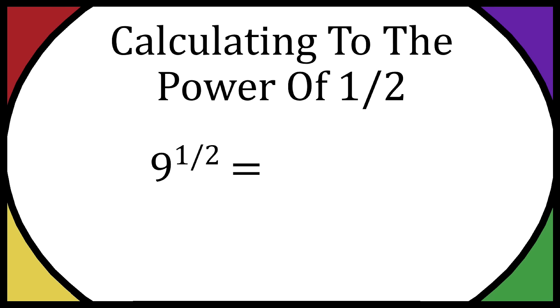So how do you calculate to the power of a half? Well, let's take 9 to the power of a half — that's just going to be equal to the square root of 9, because to the power of a half just means square root. So in this case we have the square root of 9, which is 3.